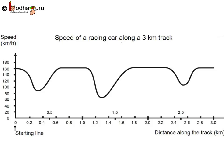A car race is happening. Here is a speed-distance graph of a racing car from the start of the second lap to the start of the third lap. Instead of speed-time, we have plotted speed-distance — that is, what is the speed of the race car at each kilometer of the race track. Speed is on the y-axis in kilometers per hour and distance is on the x-axis in kilometers.